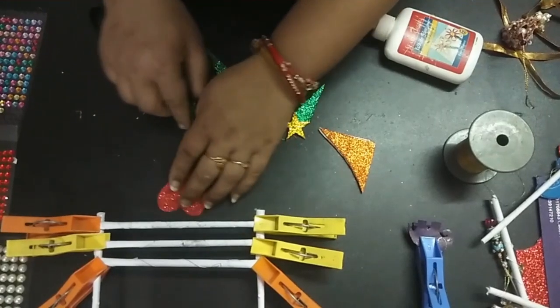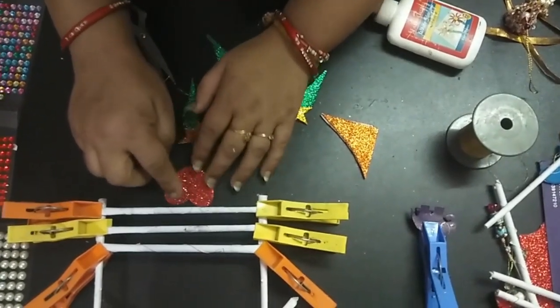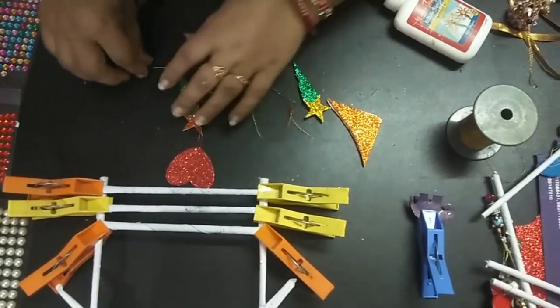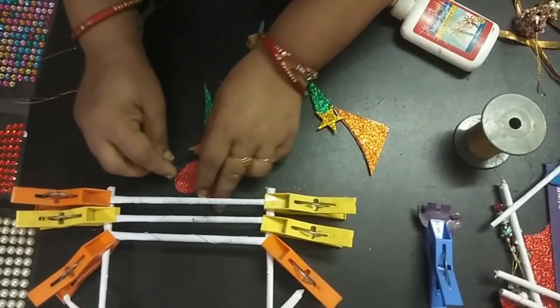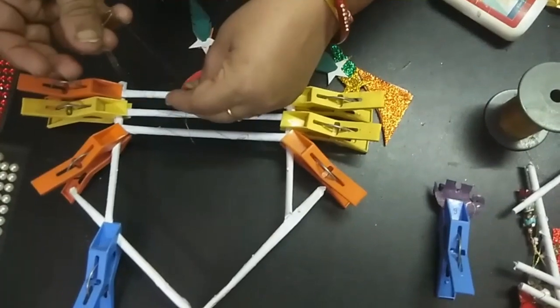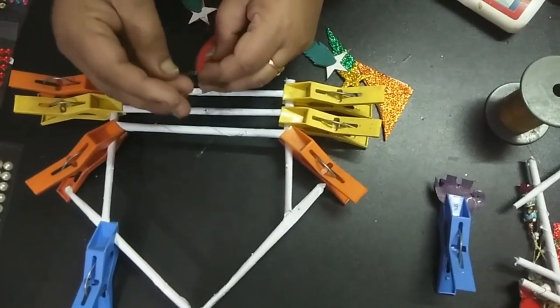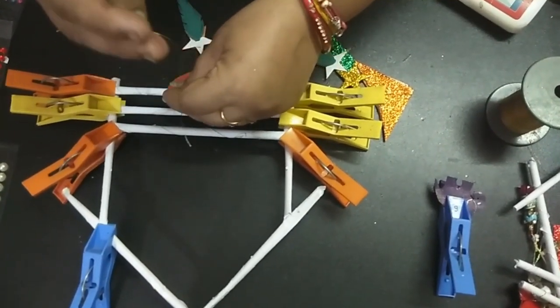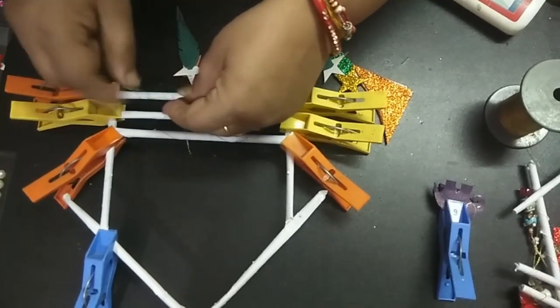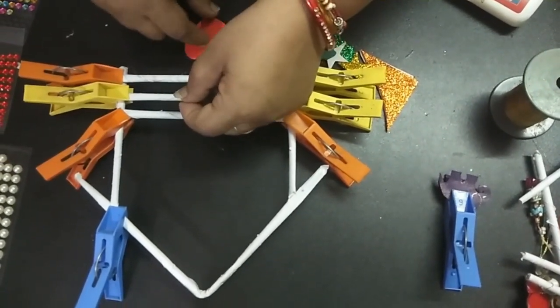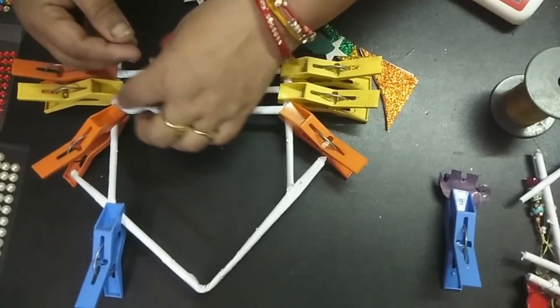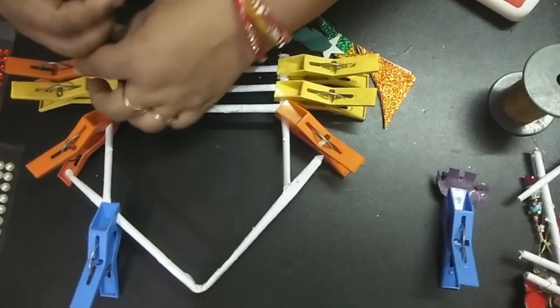This hanging is ready. Now we will hang this heart here. For this also we again require the thread, so I'll do the same thing. Now we are going to tie this here and we will cut this out from here and stick it here.